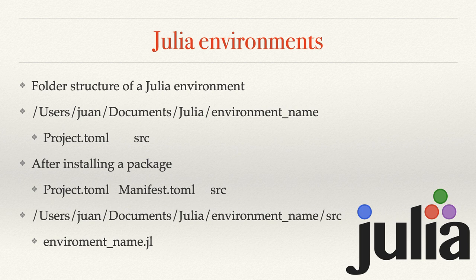After you've activated this environment — I'm going to show you how to do this — and you install your first package, you'll also have a manifest.toml file. You can read up on the Package Manager on Julia's website about the project.toml and manifest.toml files. What's kept in there to track versions and information about your project is kept in those files. Once you've generated this environment, it also creates a .jl file named after your environment, ready to use.